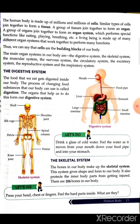Similar types of cells join together to form a tissue. A group of tissues join together to form an organ. A group of organs join together to form an organ system, which performs special functions like eating, playing, breathing, etc. A living being is made up of many different organ systems that work together. Thus, cells are the building blocks of our body.